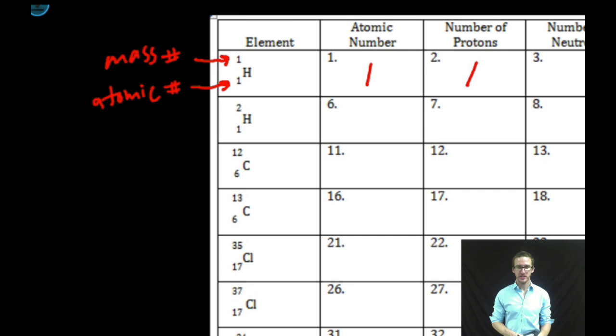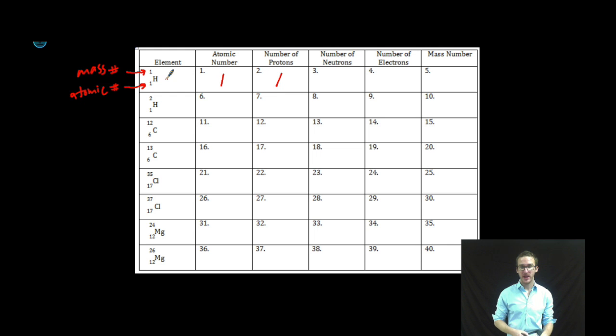To determine the number of neutrons, remember that the mass number is the sum of your protons and your neutrons. So the easiest way to determine number of neutrons is simply to subtract the number of protons that you have, or your atomic number, from your mass number. In this case, there are no neutrons in an isotope of hydrogen-1. Number of electrons, we're going to focus on electrically neutral atoms here. In other words, our number of electrons are going to match our number of protons. Mass number is going to come from the top number there. But again, it's the sum of our protons and our neutrons. In this case, 1.